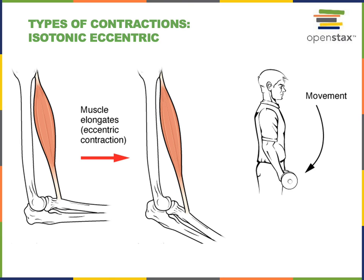Another example of isotonic eccentric contraction is performing squats. As you perform a squat, your quadriceps femoris muscles perform isotonic eccentric contraction to slow down the movement of flexion of the knee joints. The load of your body weight produces the movement, and the quadriceps femoris muscles produce less tension than your body weight, so the movement occurs but is controlled and slowed down by the eccentric contractions.